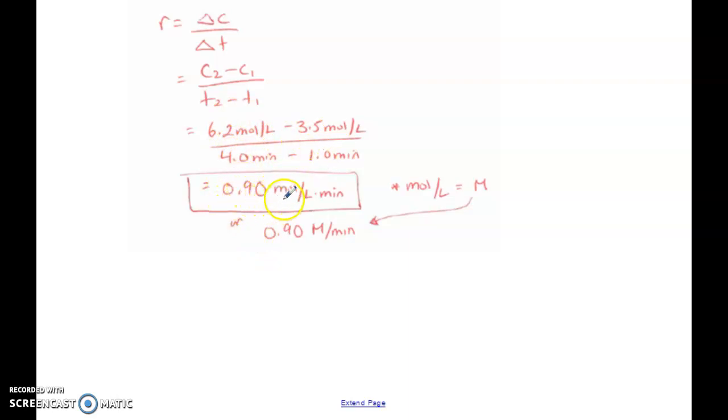So once you work that out, you get 0.90 moles per liter. And check this out. This one, we happen to be working in minutes. So this is moles per liter per minute. Just because I told you we're most of the time going to be using seconds, that doesn't mean every single process is going to be using seconds. So this is perfectly fine, moles per liter per minute.